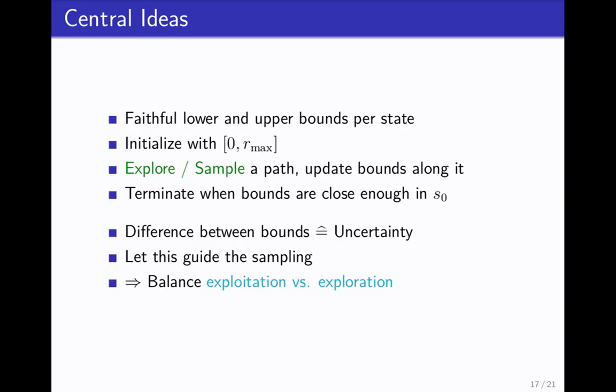What do we do? We initialize lazily, we give all the states a faithful upper and lower bound, which is also related to the ideas presented previously. We just initialize it with zero and the given upper bound. Then this is where the statistical methods come in. We sample a path and then we somehow update the values along this path by a method I'll explain on the next slide. We'll just terminate when the bounds are close enough in the initial state, where we want to know what the values are.